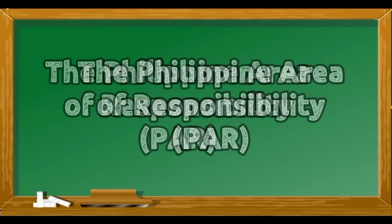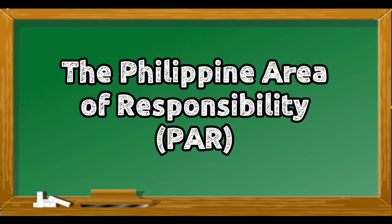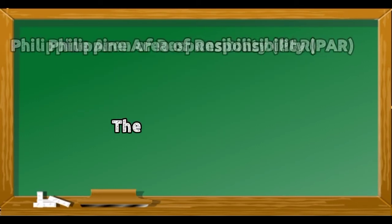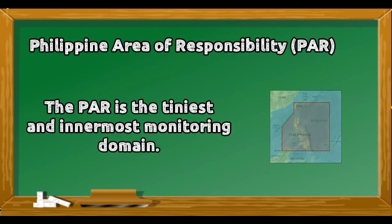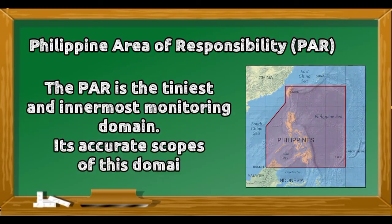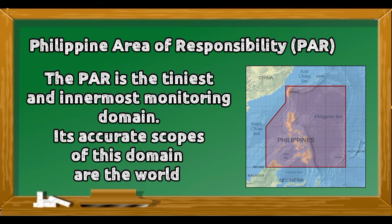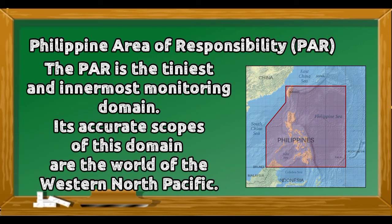The Philippine Area of Responsibility. The Philippine Area of Responsibility is the monitoring domain used to track storms. Its scope covers the Western North Pacific.